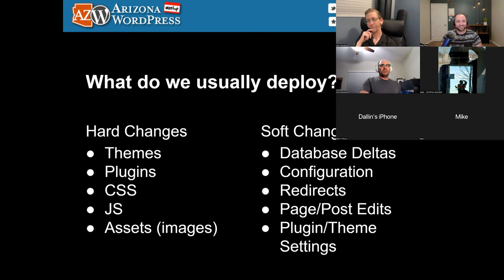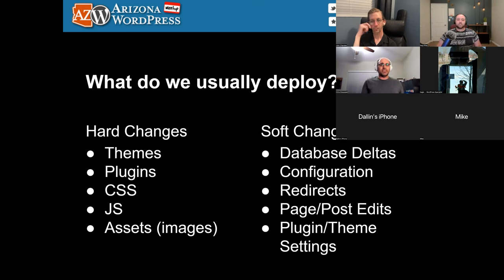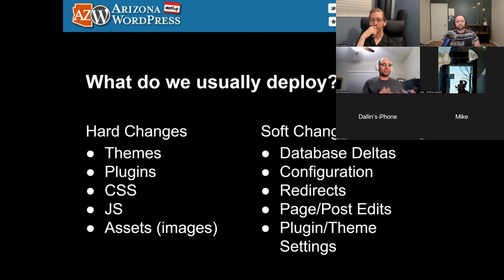Thinking about what we usually deploy when going from local or development to production, I classify it as two types of changes: hard changes and soft changes. Hard changes are the physical digital files we copy back and forth — files we edit in our code editors, mostly static things. You edit a CSS file, it stays static. Plugins, assets, and images are all hard changes.